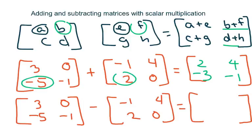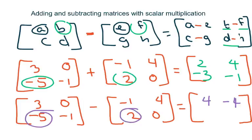If I put a subtraction here then all these would just be subtractions. You basically do the same thing: 3 minus a negative 1 is 3 plus 1, so that's 4. Zero minus 4 is negative 4. Negative 5 minus 2 is negative 7, and negative 1 minus 0 is negative 1.